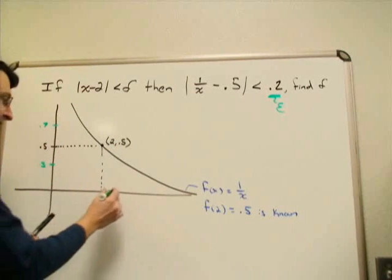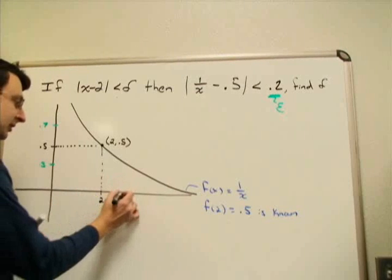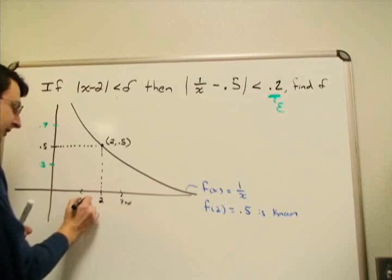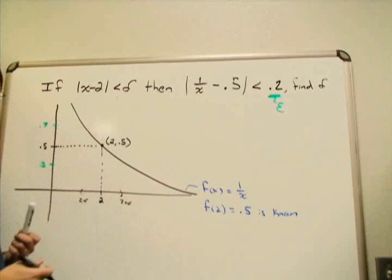We're trying to figure out a value of delta so that if I go 2 plus delta and 2 minus delta, for every number inside of here, I'm always inside of that epsilon band.